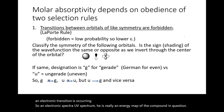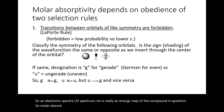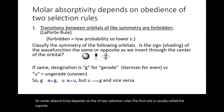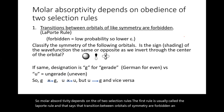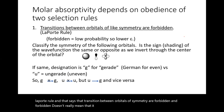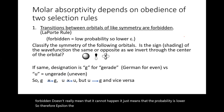Molar absorptivity depends on the obedience of two selection rules. The first is called the Laporte rule, which states that transitions between orbitals of like symmetry are forbidden. Forbidden doesn't mean the transition cannot happen — it just means the probability is lower, and therefore epsilon, the molar absorptivity, is lower.